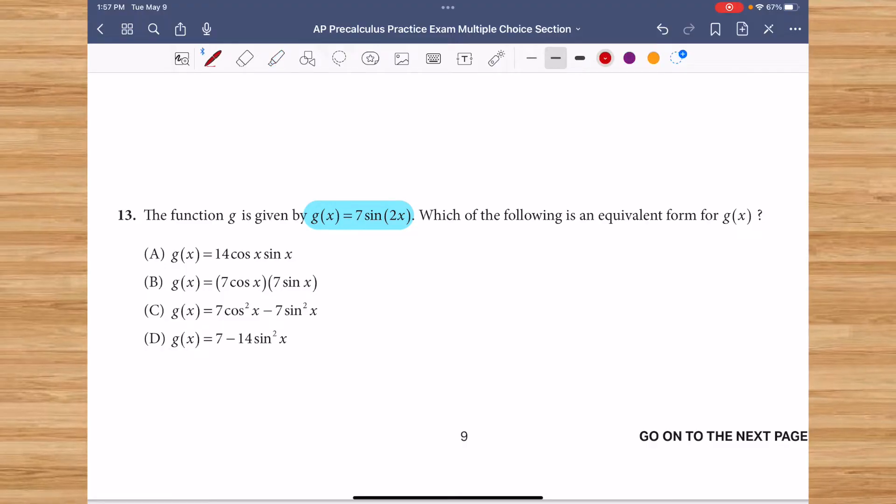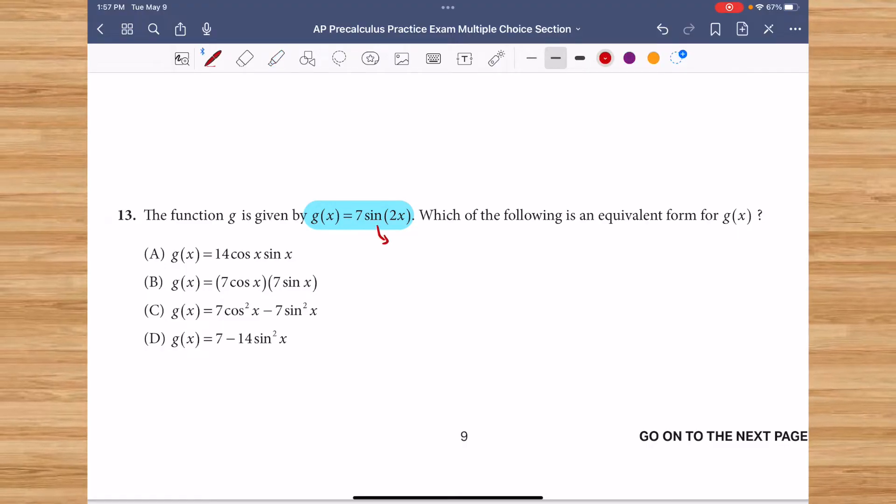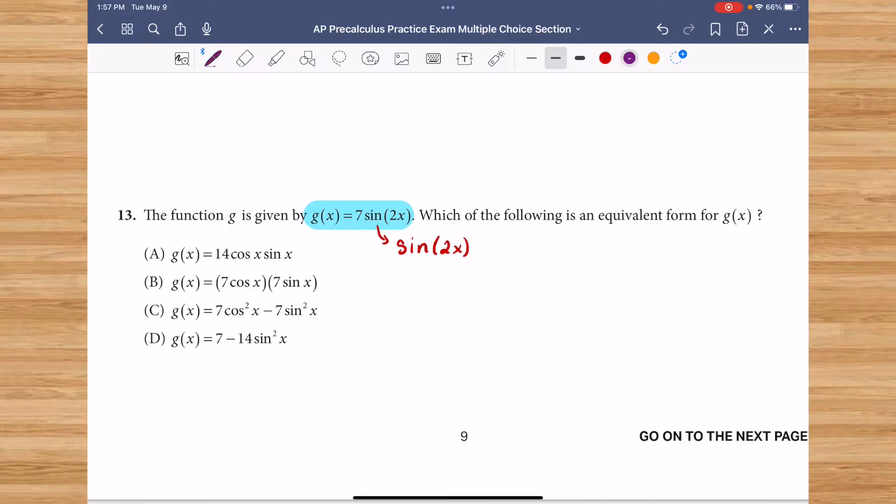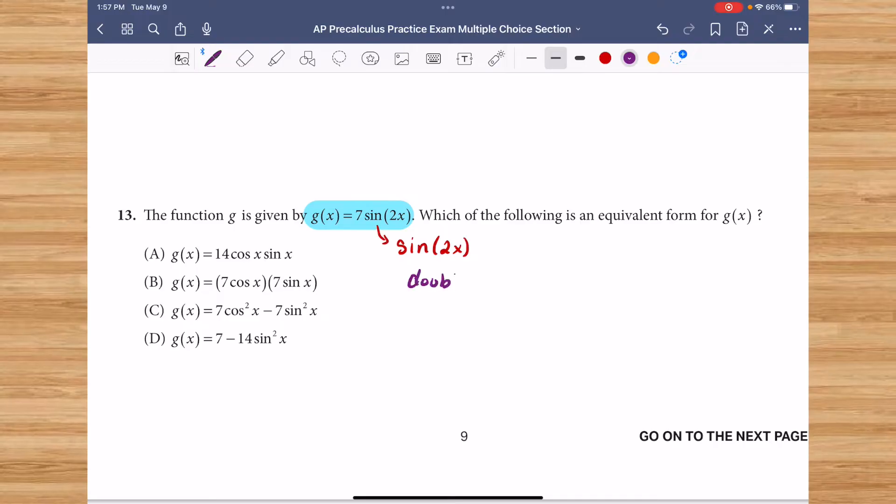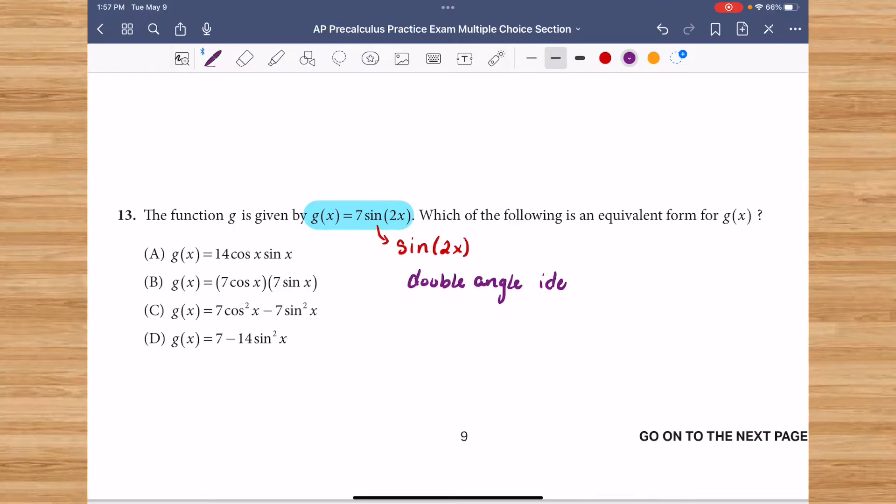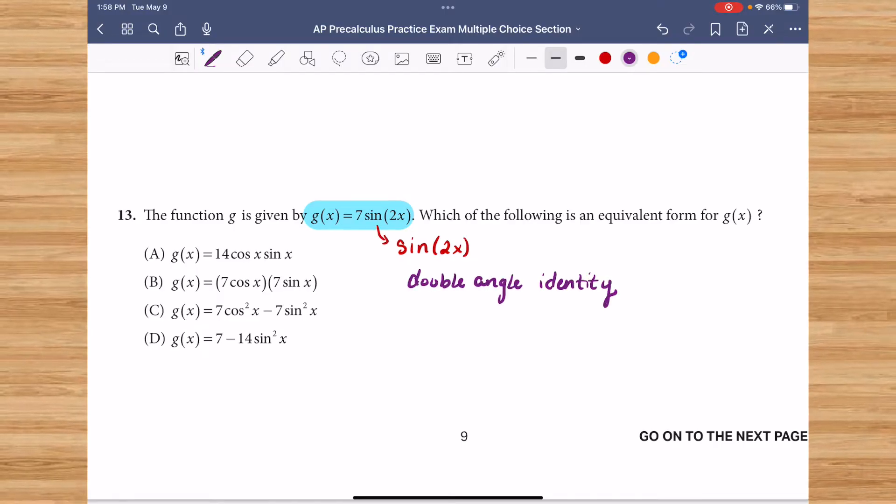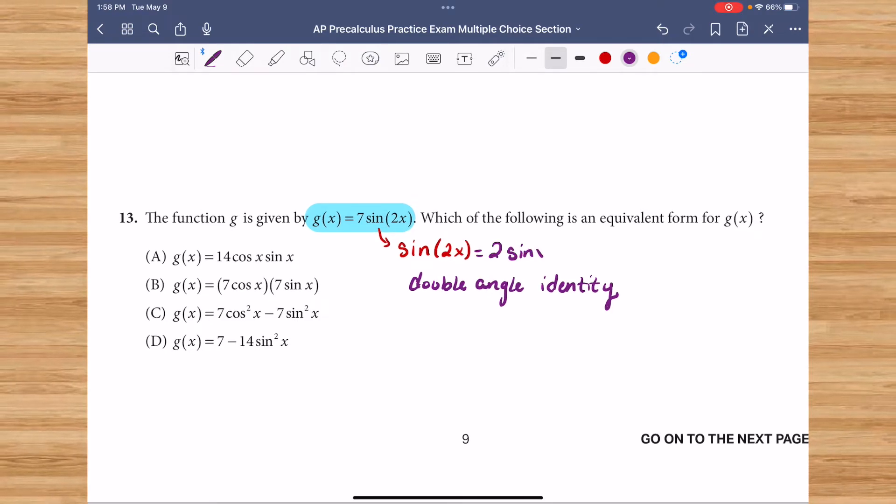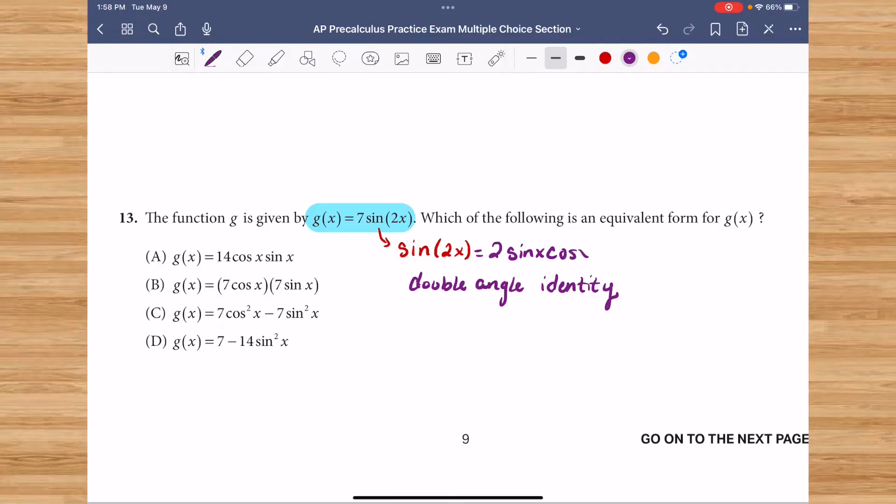So the first thing that I notice is that g of x does include the expression sine of 2x. I know that this is a double angle identity. And an equivalent form of sine of 2x is 2 times sine of x times cosine of x.